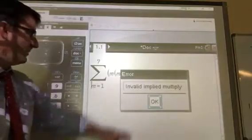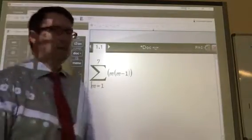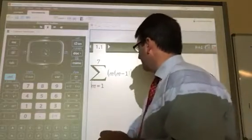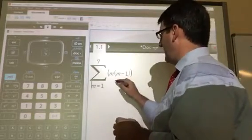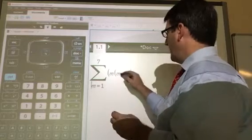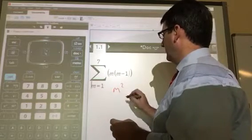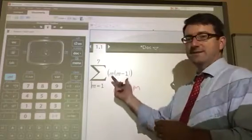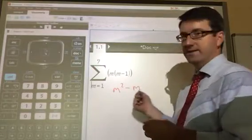So the way that we can get around this is notice that if we distribute that m, we could rewrite this. m times m is m squared. m times negative 1 is negative m. So we could rewrite this as m squared minus m.